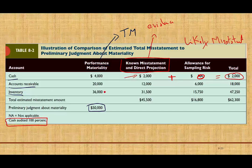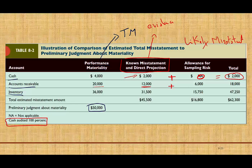Now let's look at receivable. The tolerable misstatement for receivable is $20,000. The observed misstatement we found is $12,000 — those are actual misstatements. Then we projected an additional $6,000 error due to sampling, which is 50% of the $12,000 found. So the total misstatement for accounts receivable is $18,000, which is still below the $20,000 tolerable misstatement.